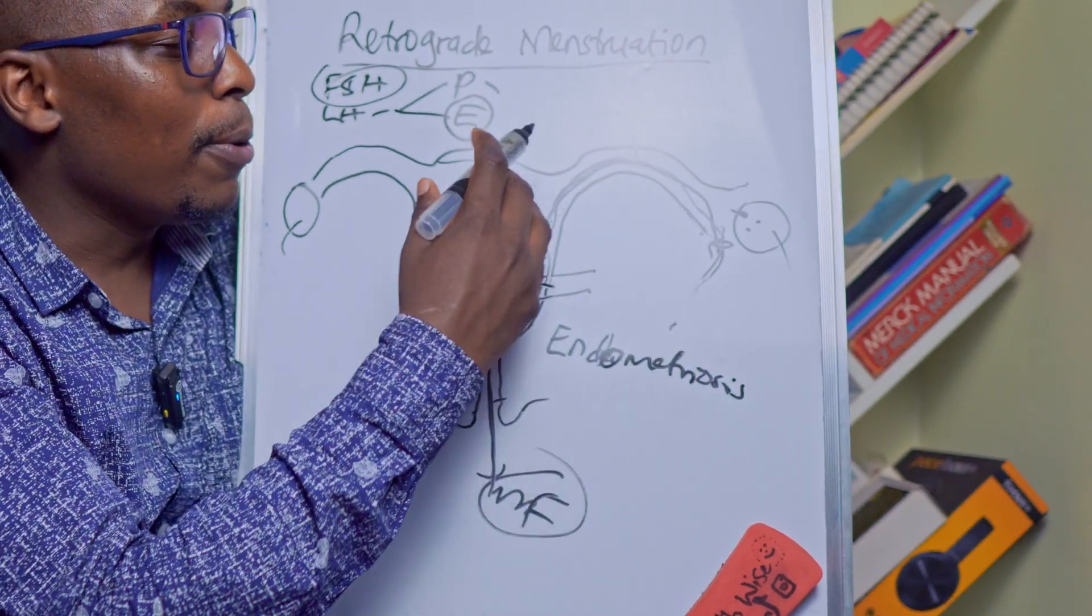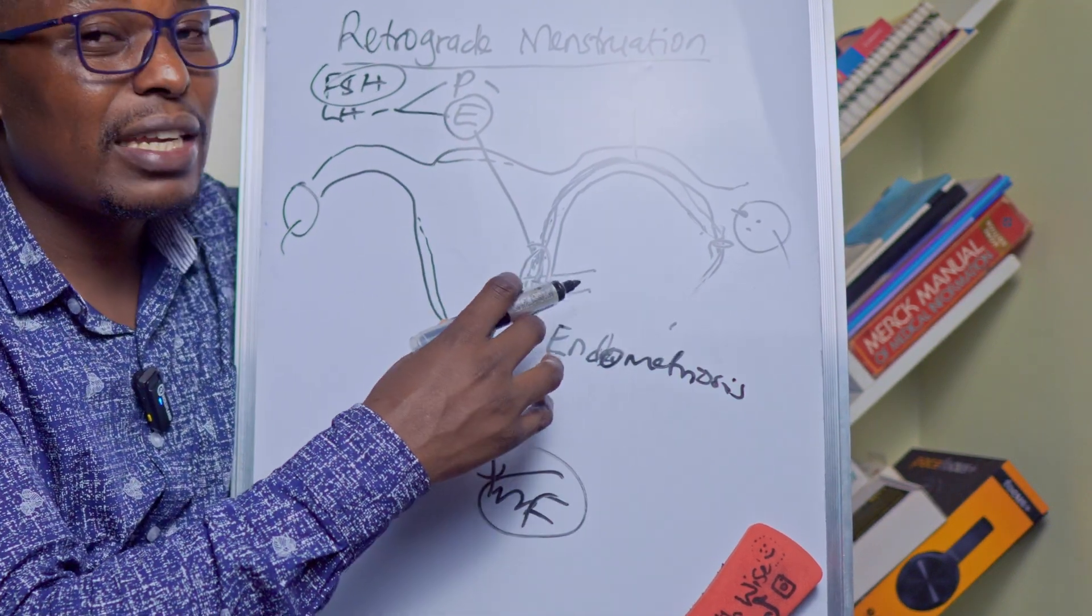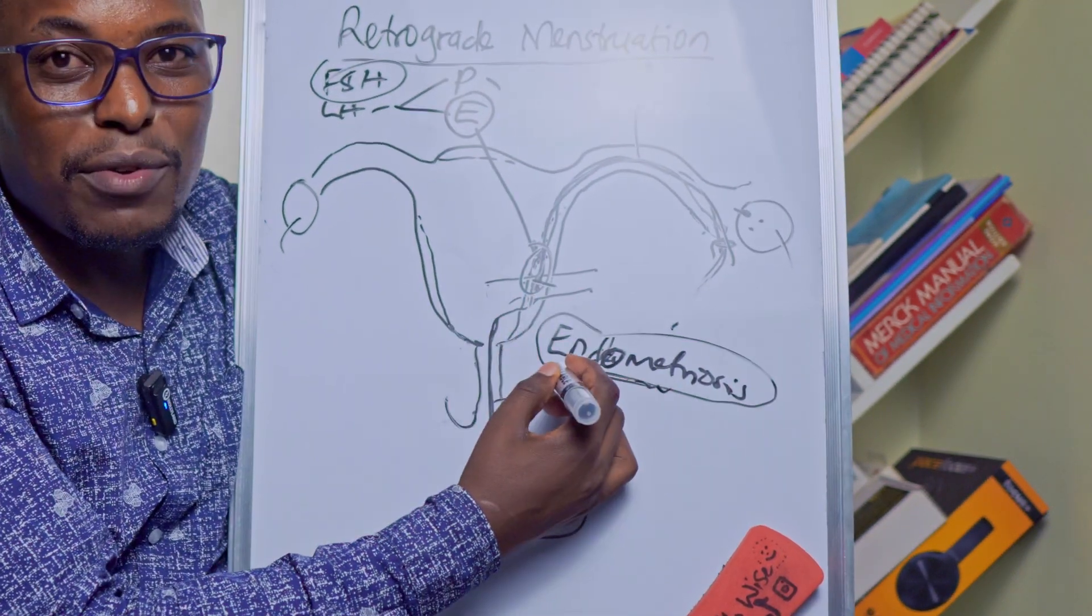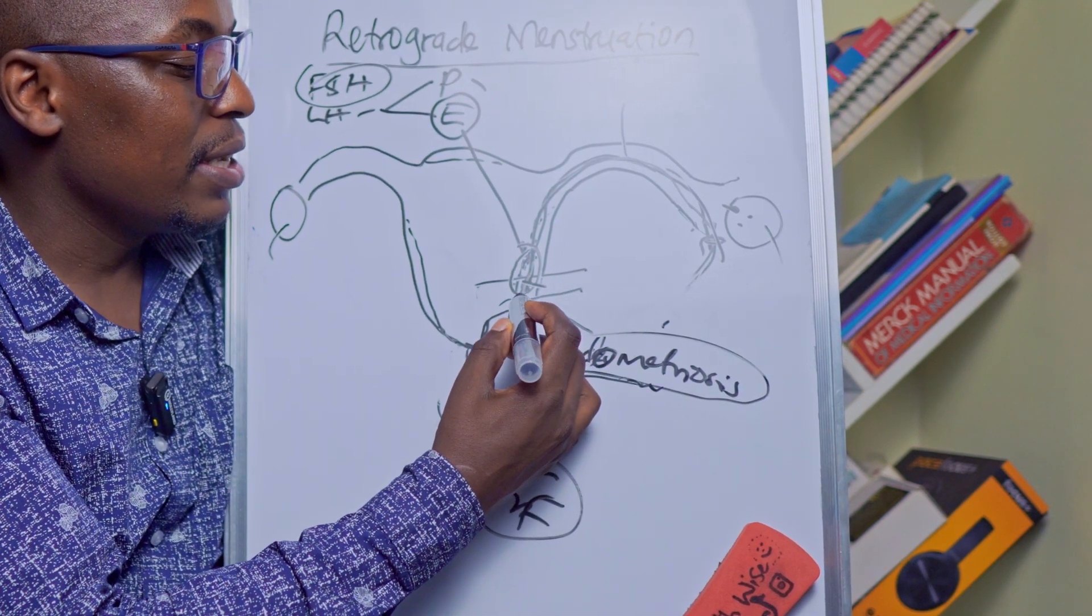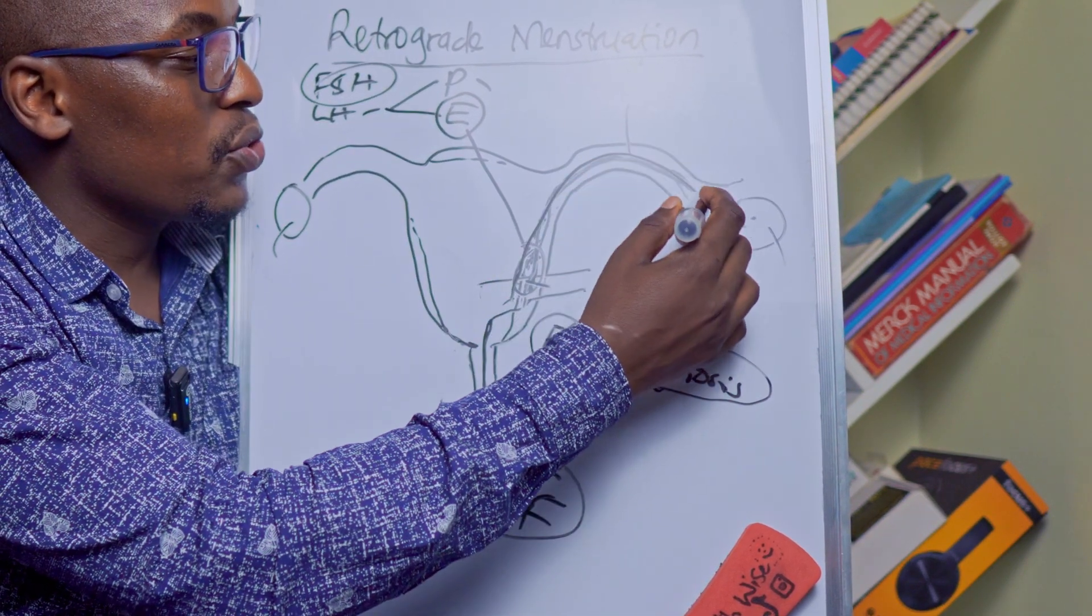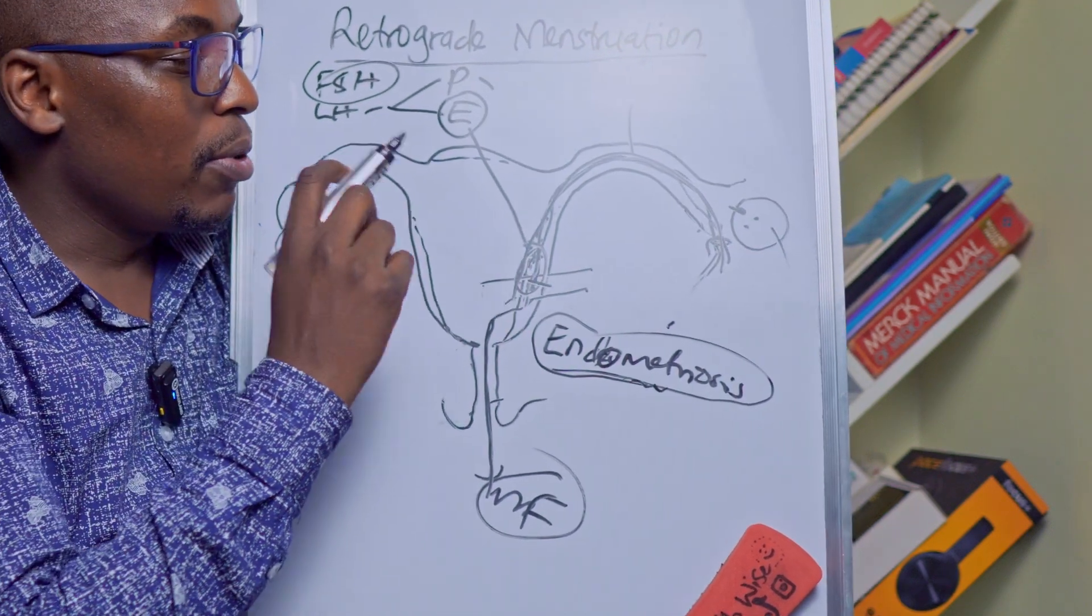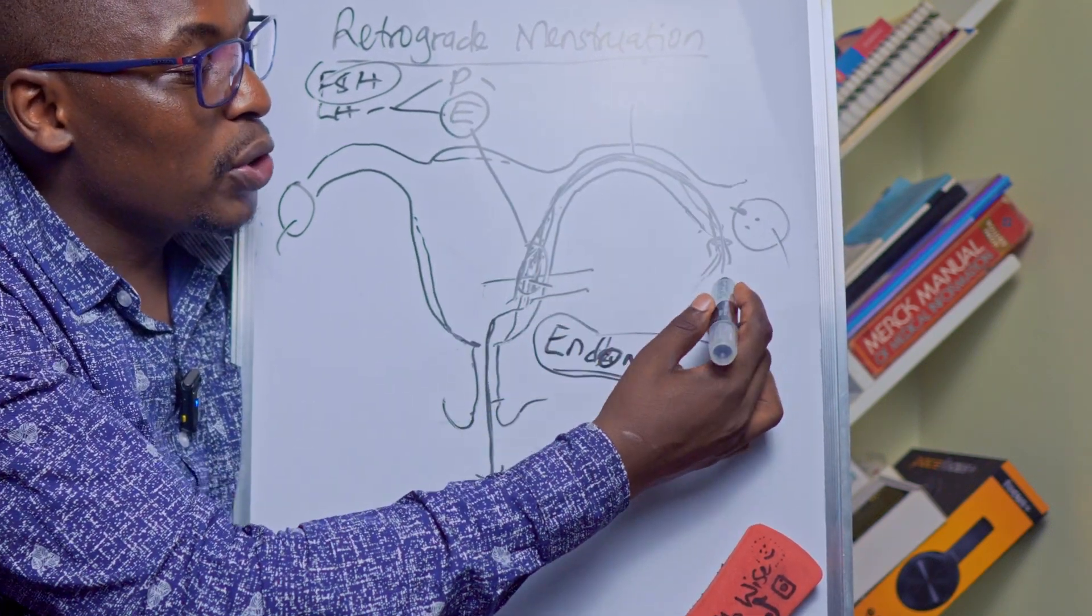Not everyone usually gets endometriosis despite a big percentage having this retrograde menstruation, but most people are usually able to clear the blood that falls into their abdomen in time.